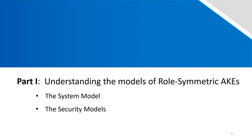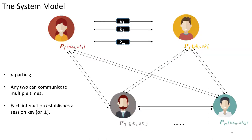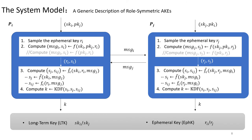In part one, I will give understanding of the system model and the security models. In the system, there exist N parties. Any two can communicate multiple times and each interaction establishes a session key or bot. Taking an execution instance between two parties Pi and Pj as an example, we can give a generic description of role-symmetric AKEs like in this picture. For the party Pi, it will take its own secret key SKi and the public key of other party PKj as input.